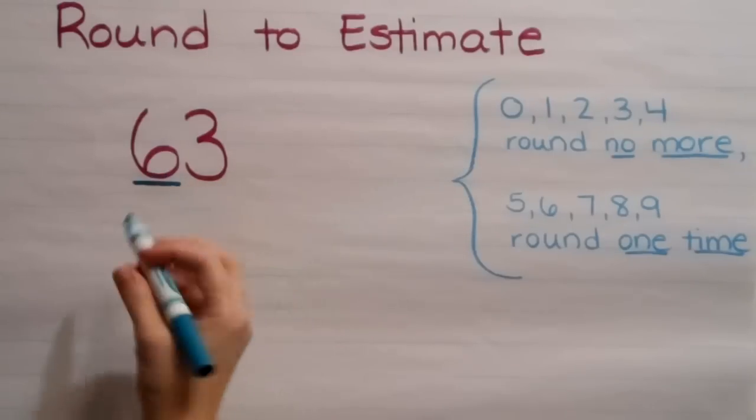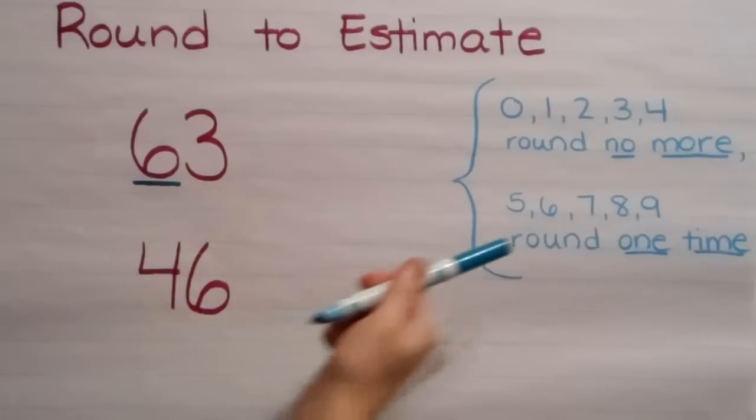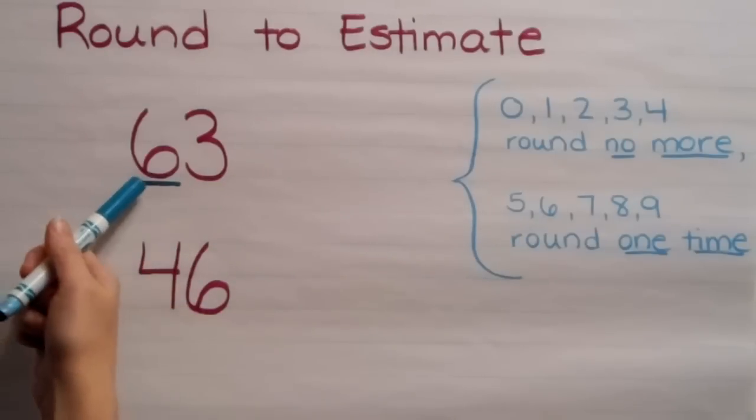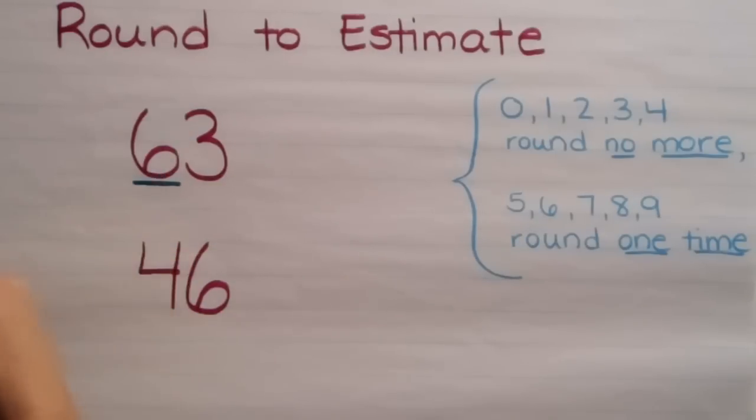If it says round no more, it's going to stay a six. If it says round one time, we're going to go up one and become a seven.